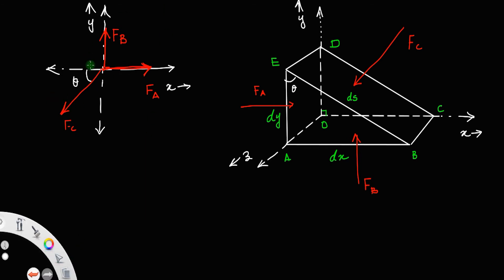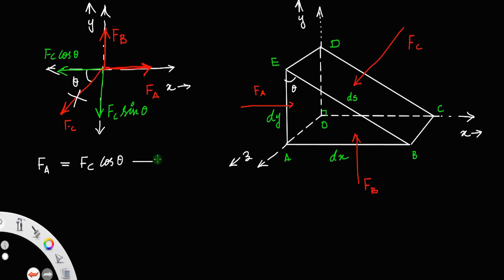Now, you can resolve F_C: the horizontal component will be F_C cos θ and the vertical component will be F_C sin θ. For equilibrium, the net horizontal force must be zero, so F_A equals F_C cos θ — let us call that equation 1. Similarly, F_B equals F_C sin θ — let us call that equation 2.